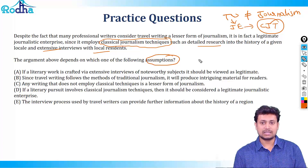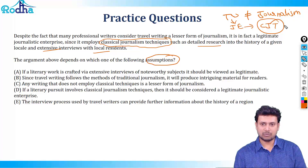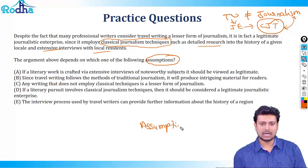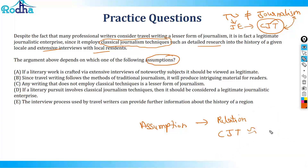The author says travel writing is in fact a legitimate journalistic enterprise because it involves classical journalism techniques. What is not spoken is the relation between classical journalistic techniques and the point of legitimacy. The assumption has to bridge that gap — it has to talk about some form of relation between classical journalistic techniques and being a legitimate journalistic enterprise. Only when you assume that journalistic techniques are related to journalistic enterprise does the argument make sense.